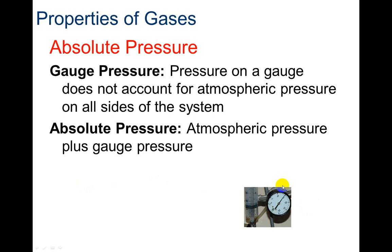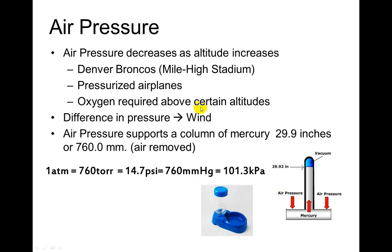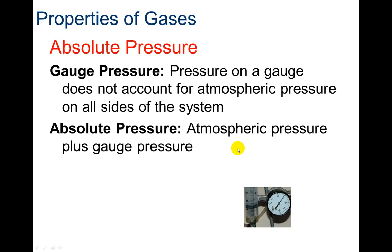Now we're going to talk about absolute pressure. What we mean by absolute pressure: the pressure you get off of a gauge does not account for atmospheric pressure on all sides of the system. Gauge pressure is just kind of what you read off of here. If we want to consider what that would be with atmospheric pressure, my absolute pressure is going to be atmospheric pressure plus that gauge pressure.